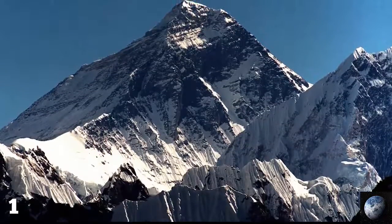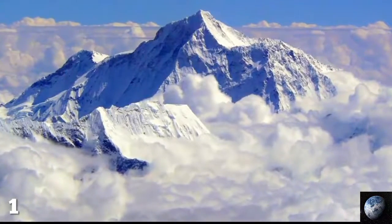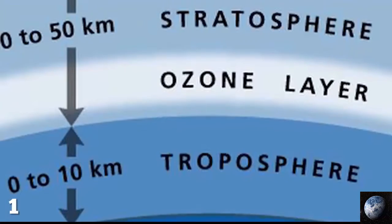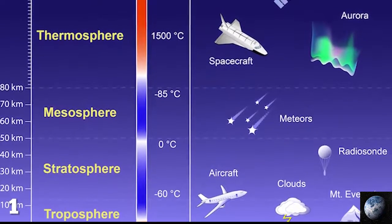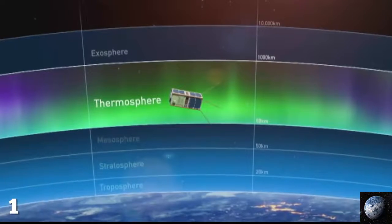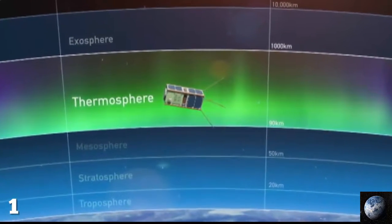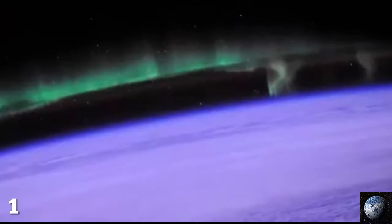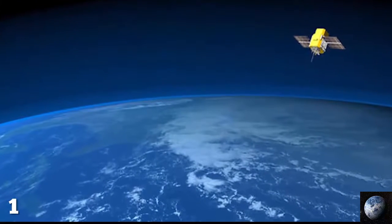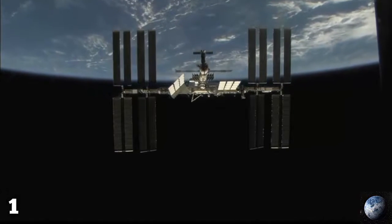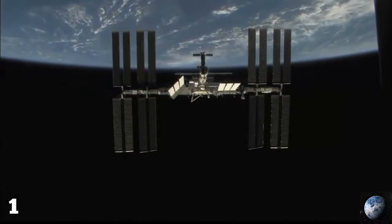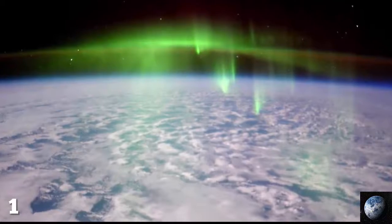Currently under construction is Saudi Arabia's Jeddah Tower, with this building set to be the world's first to go beyond a kilometer in height. But that's nothing compared to Mount Everest, which reaches 8.8 kilometers at its peak. Everest punctures our Earth's troposphere, which lies 8 to 14 kilometers up.